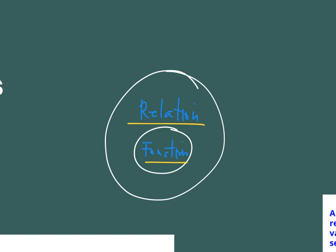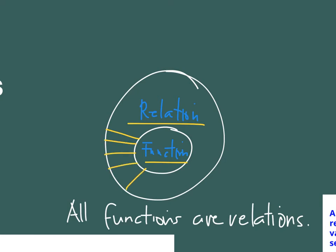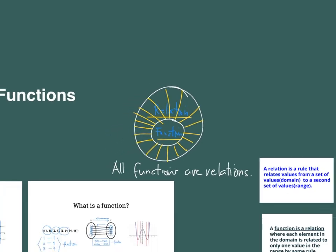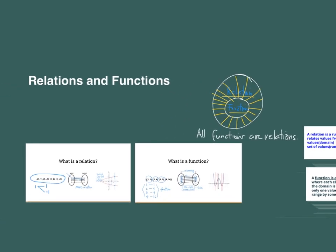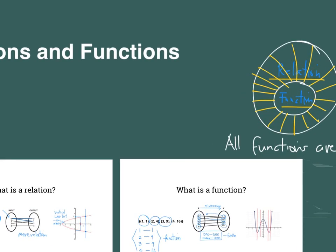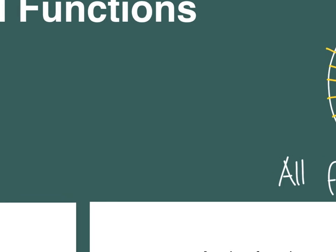But we cannot say, so the statement all functions are relations is correct, but the reverse is not correct. We cannot say that all relations are functions, because as we can see in the diagram, there are relations outside the set of functions, and these relations are what we call mere relations. So I hope you learned from this video, this is focused more on the basic idea, the fundamental idea, on how to identify a function from a mere relation. Always keep in mind, the defining characteristic of a function is that one value in x is just paired to a single value in y.